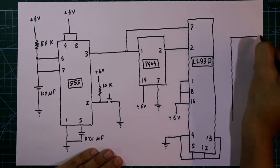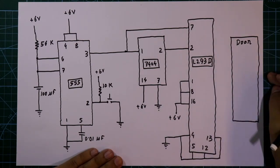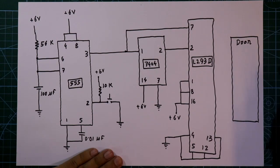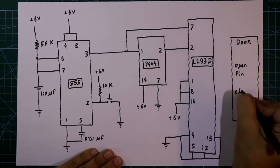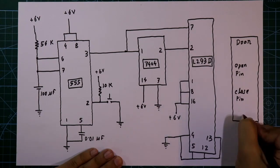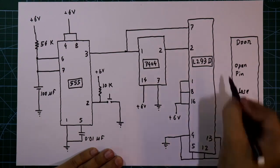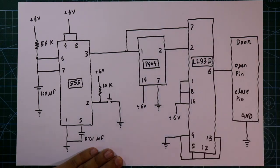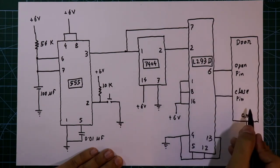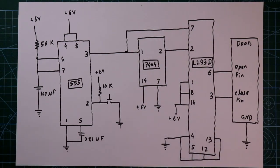Now we need the door model. In the last video we discussed and constructed our door. It has three pins: open pin, close pin, and ground. The ground pin is connected to ground, the open pin of the door is connected to pin number 6, and the close pin of the door is connected to pin number 3 of L293D.